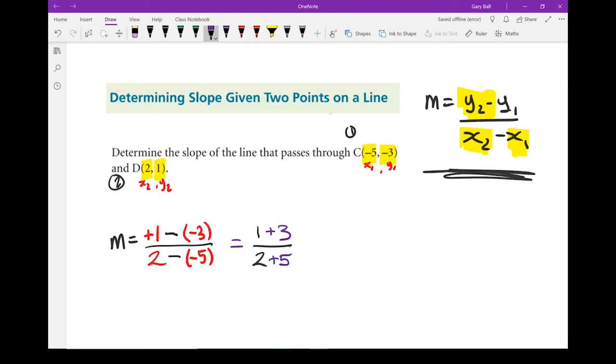And from here, I can just do the math. 1 plus 3 equals 4, 2 plus 5 equals 7. The slope of this line is 4/7.